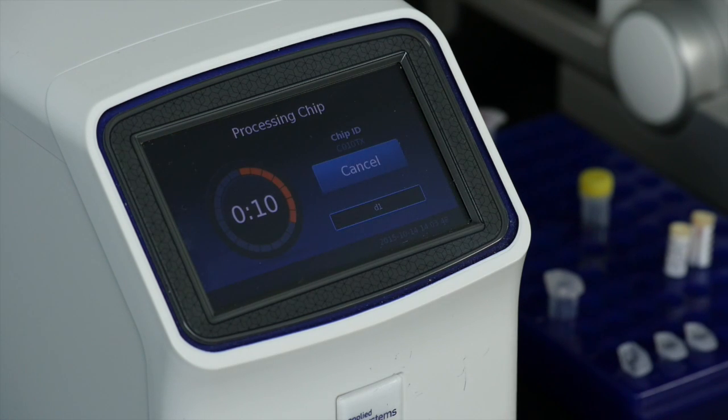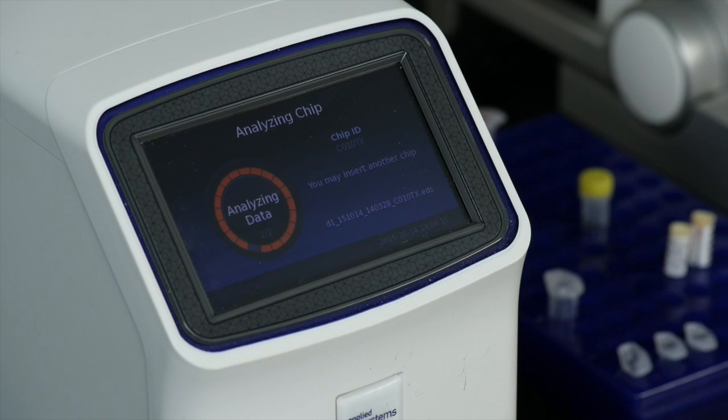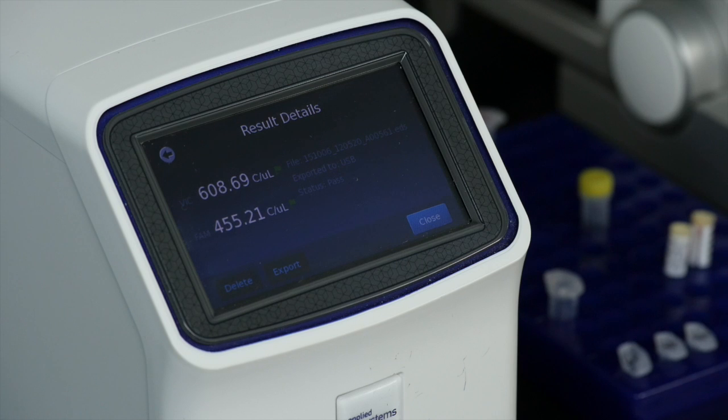During the chip reading process, the instrument reads the unique chip identifier and captures the fluorescent signal from the amplified sample. A chip read consists of capturing ROX, FAM, and VIC images for all reaction wells. Data output is count of copies per microliter for both FAM and VIC channels.